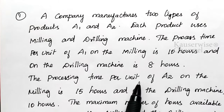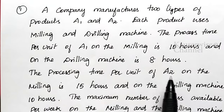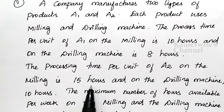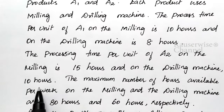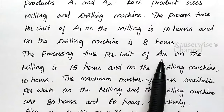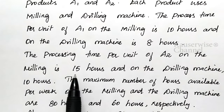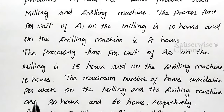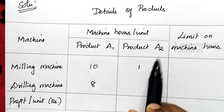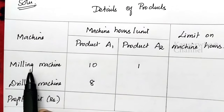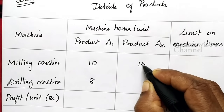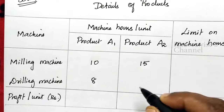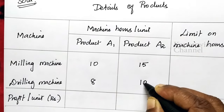In the same way, for A2, on the milling machine it is 15 hours and on the drilling machine is 10 hours. For product A2, milling machine is required for 15 hours per unit, and drilling machine is required for A2 for 10 hours per unit.